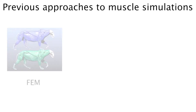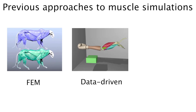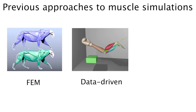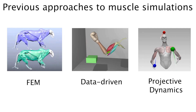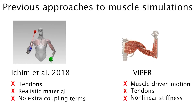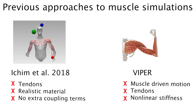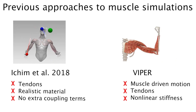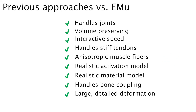Current state-of-the-art muscle simulations can be simplified into three categories: standard FEM, data-driven muscles, and constraint-based approaches like projective dynamics. Each of these approaches has limitations which prevent them from being a universal solution. We believe EMU is a one-stop-shop musculoskeletal simulation framework that brings us one step closer to ideal muscle-driven motion.